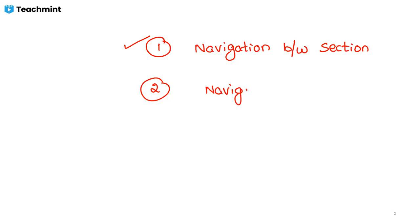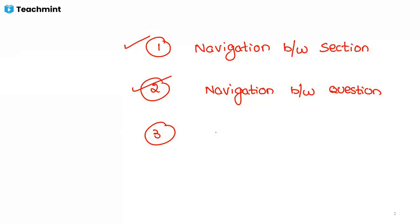Few test platforms require you to attend the first question before moving to the second. In Co-cubes, navigation between questions and between sections is both allowed. The timing is also shared — if you save time on the first question, you can use it for the second. There is an overall time duration, not section-wise and not question-wise.